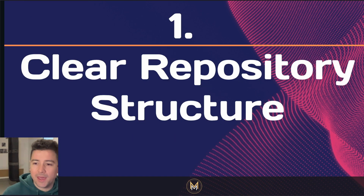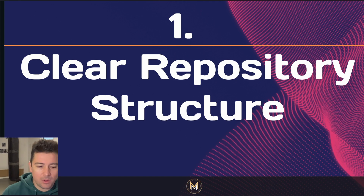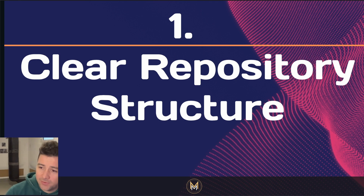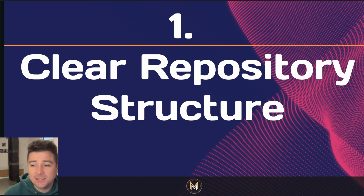At number one — and these are not in a specific order, just 10 personal tips — we have clear repository structure. This is so important. When I was starting out using GitHub, I would just have a complete mess. Establishing a clear and logical structure for your repository is essential. Organize your files and directories in a way that is intuitive for contributors to navigate. Don't leave a mess in your repository — a well-structured repository makes it easier for others to understand your project and contribute effectively.